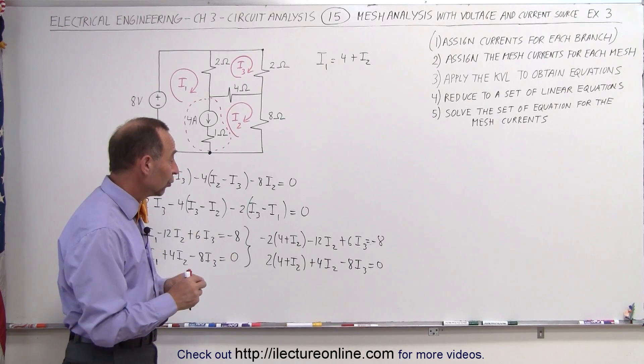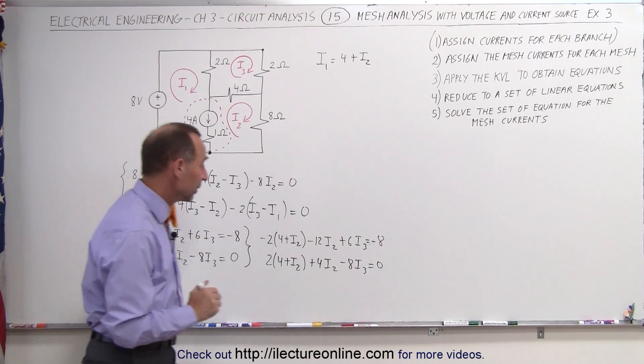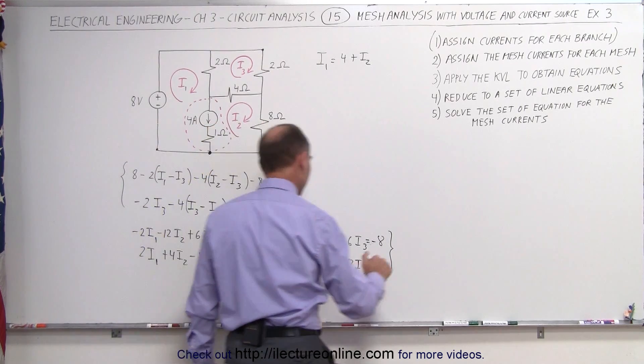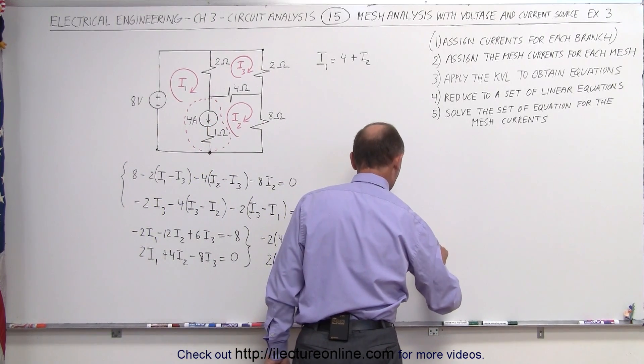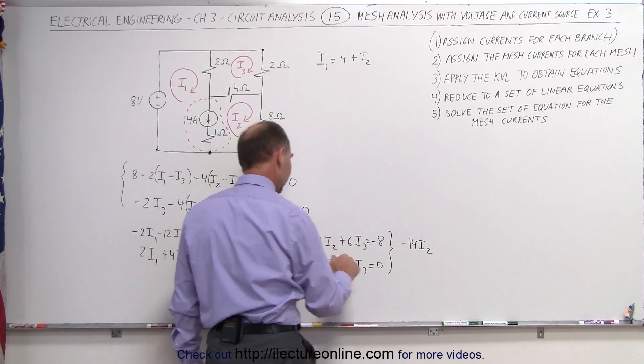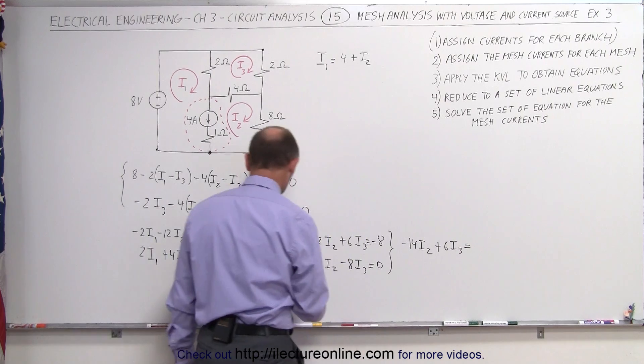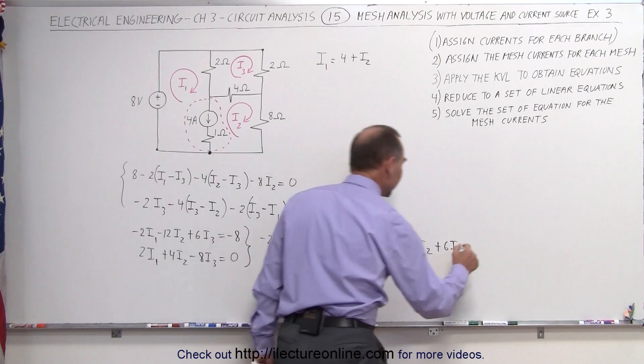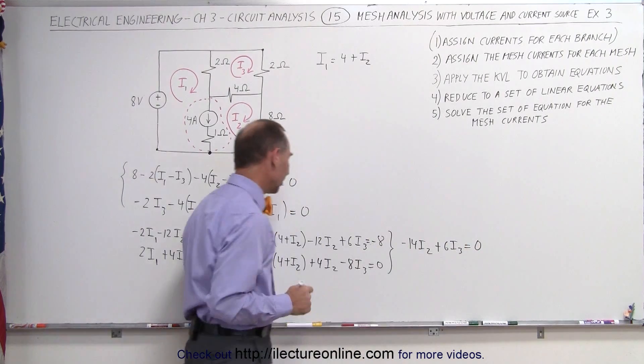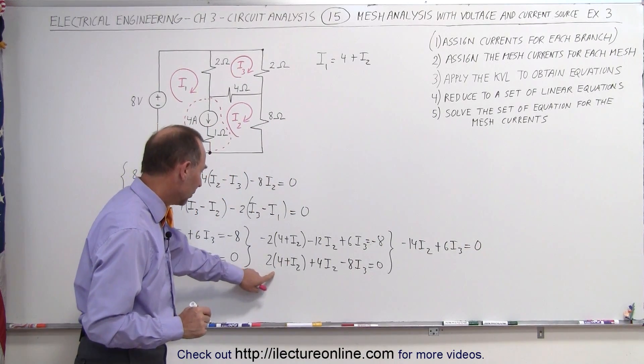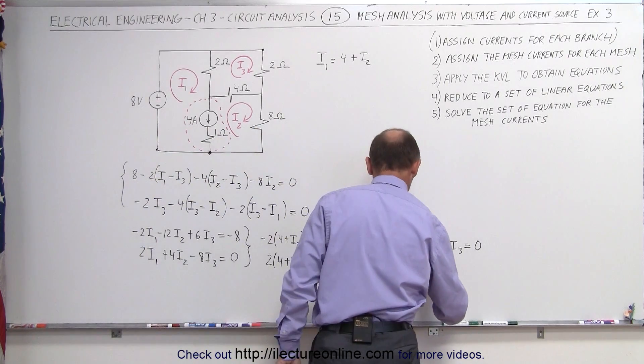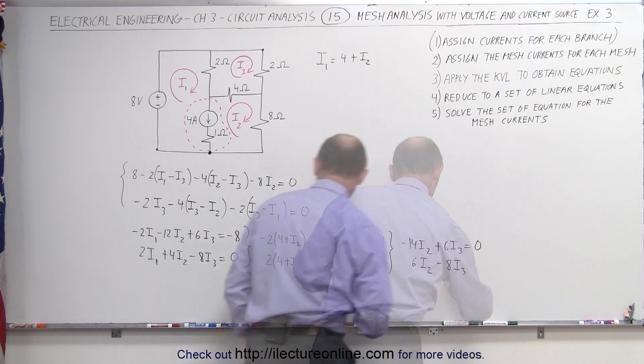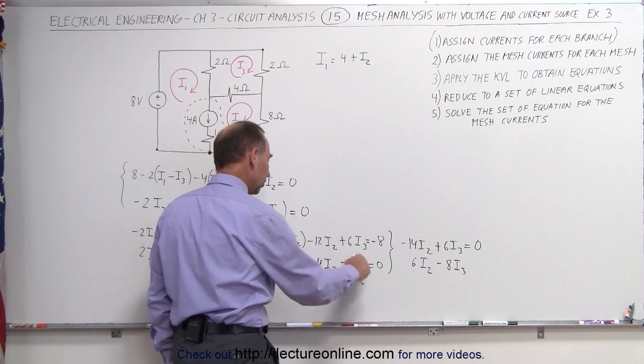Now we're going to simplify those to two equations, two unknowns, with I2 and I3 only appearing once. Minus 2I2 minus 12I2 is minus 14I2. A plus 6I3 equals, a minus 8, move to the other side equals plus 8, add it to minus 8 that gives me 0, so the minus 8s cancel out. For the second equation, I end up with 2I2 plus 4I2, that's 6I2, and a minus 8I3, and 2 times 4 is 8, move to the other side becomes a minus 8.